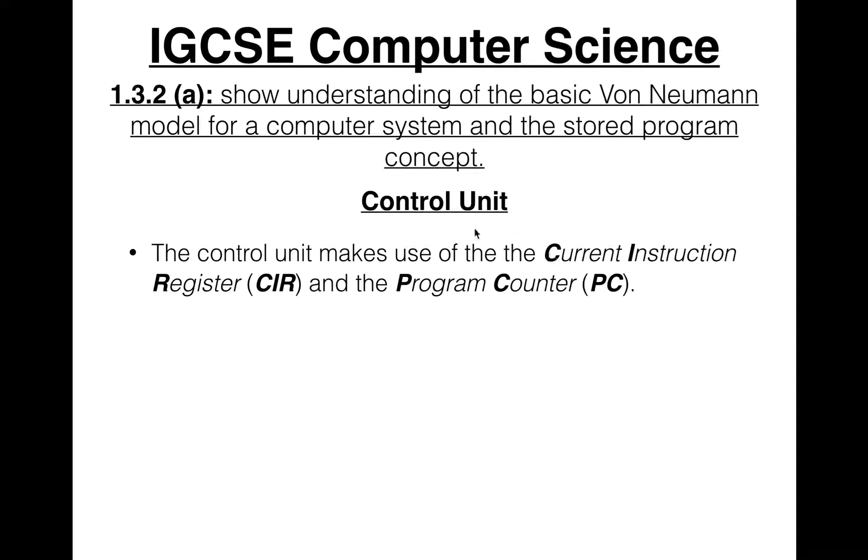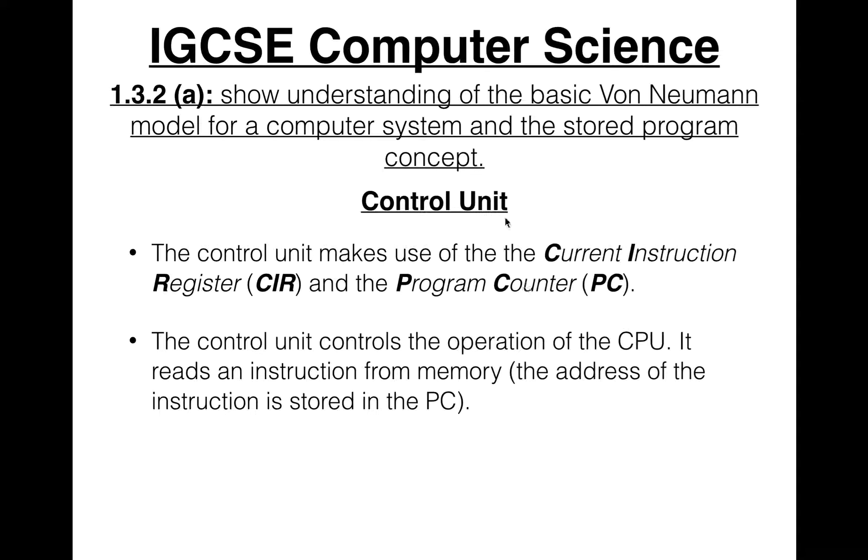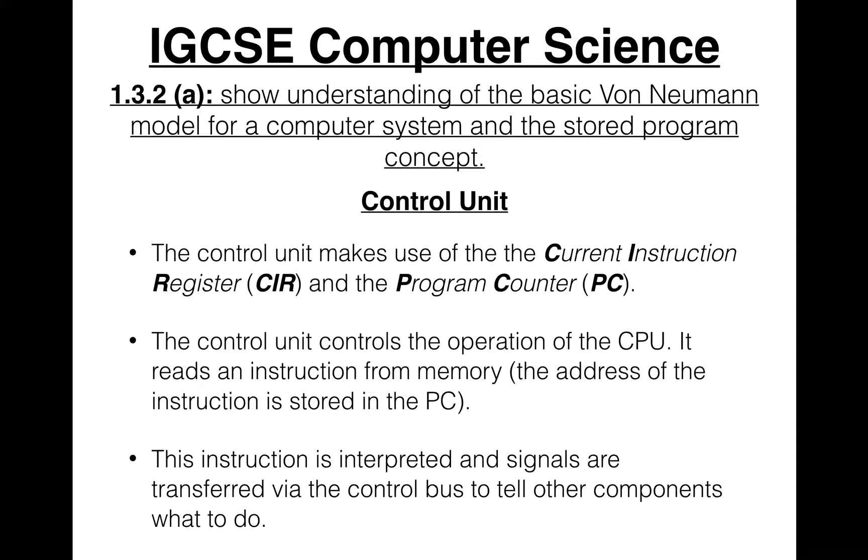The control unit is the last thing we have to look at in this video. The control unit makes use of the CIR and the PC. We're actually going to look at the CIR and PC in the next video when we look at the fetch-execute cycle. The control unit controls the operation of the CPU. It reads an instruction from memory, so the address of the instruction is stored in the PC. This instruction is interpreted and signals are transferred via the control bus to tell other components what to do. That's pretty much how the control unit works in a nutshell.